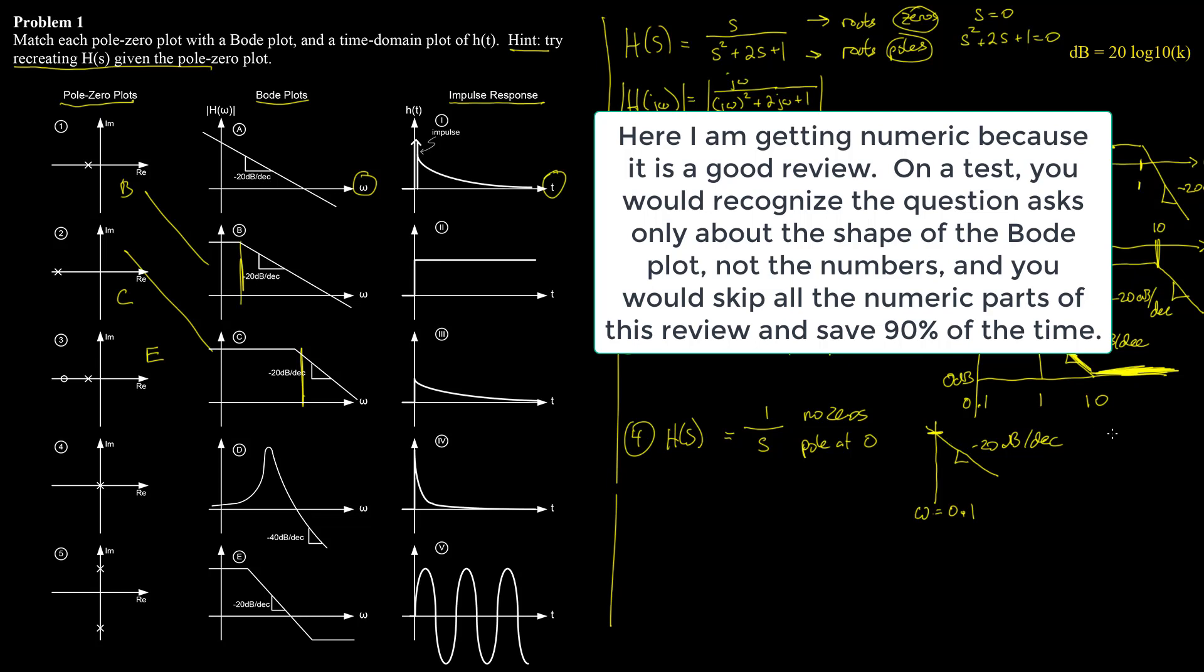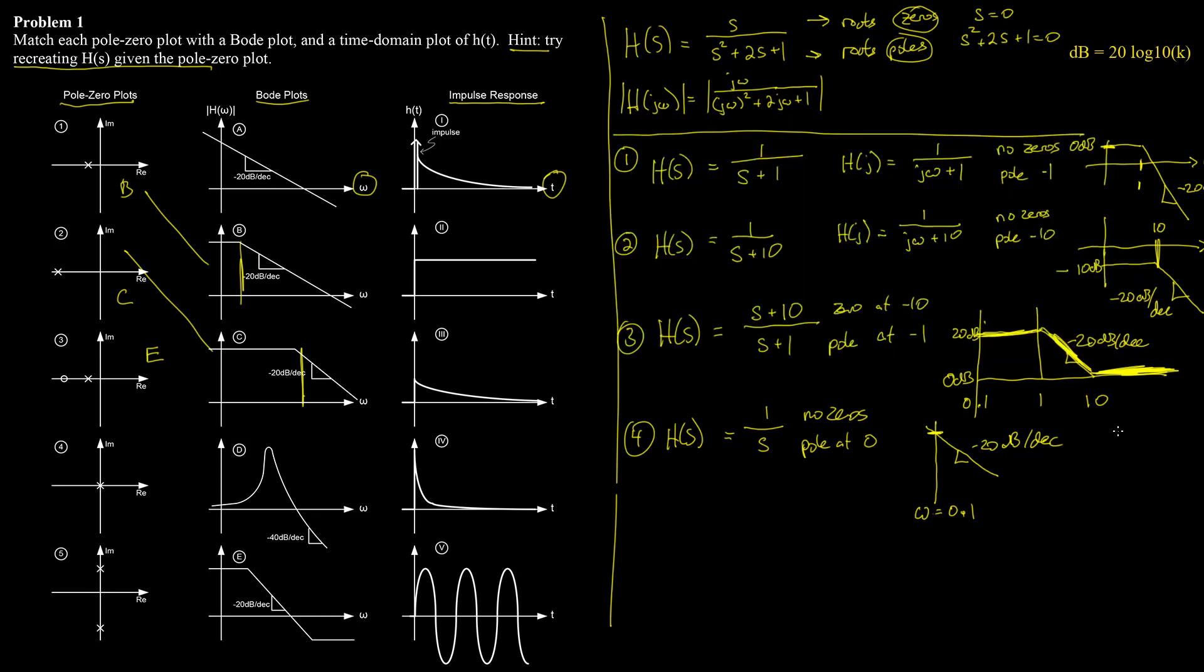So this question doesn't ask for it, but just for completeness sake, if you wanted to find out what this full plot was, you'd evaluate h of j omega at 0.1, which is 1 over j 0.1. And we're graphing, up here we're graphing the magnitudes. But that's just the same as magnitude of 1, which is 1 over the magnitude of j times 0.1, and that's 0.1. So that's 10, so that's 20 dB plugged in this formula. And so you'd end up having a fully notated equation Bode response that looks like that. But this looks like this up here. So therefore this is A.